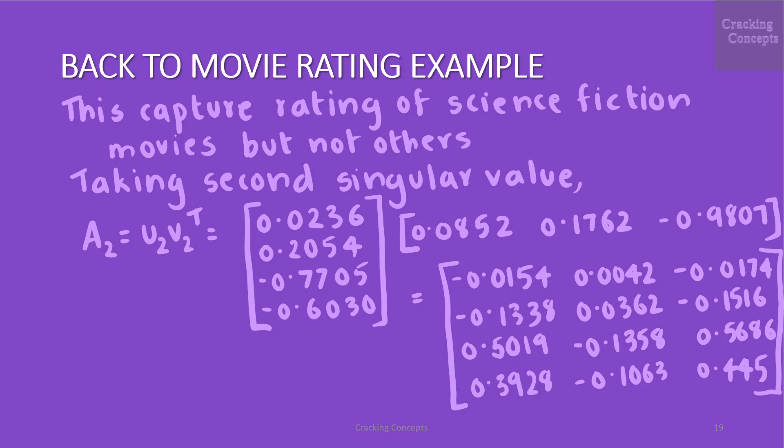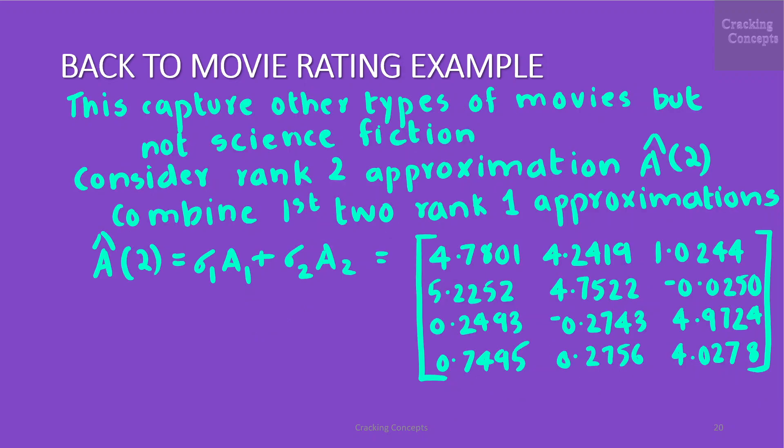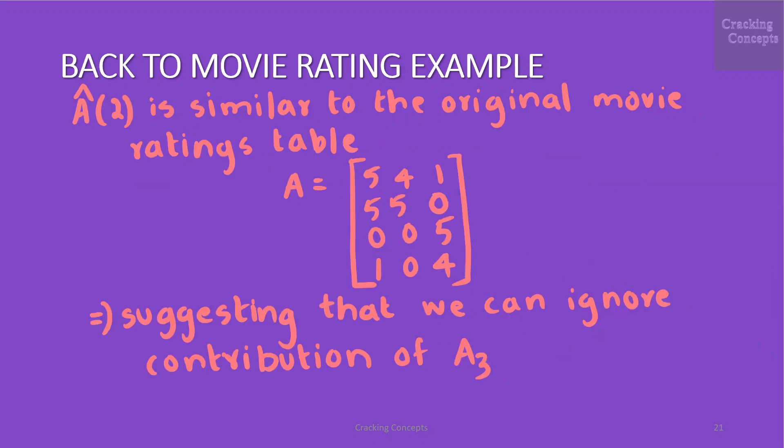This leads us to consider the rank 2 approximation that is Â_2 where we combine the first two rank 1 approximations which is Â_2 given by σ_1 A_1 + σ_2 A_2 which will give us this matrix and we see that this is similar to the original movie ratings table we saw in the example first.